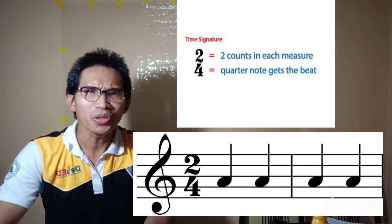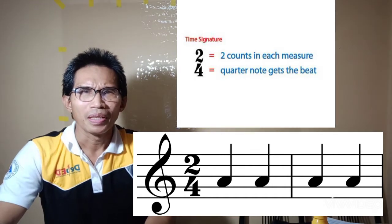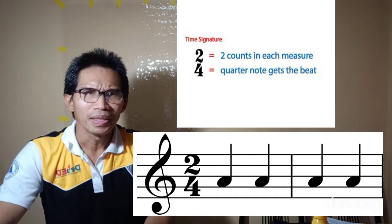The top number which is 2 tells us the number of beats in a measure. The bottom number which is 4 tells us the kind of note that receives one beat.